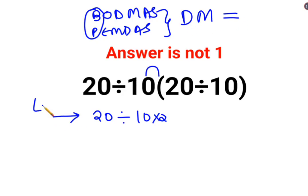So in sums like these, you have to go from left to right. Whatever operation happens first on your left hand side has to be done first. So first we have to do 20 divided by 10, that is 2 multiplied by 2. So answer for this question is supposed to be 4.